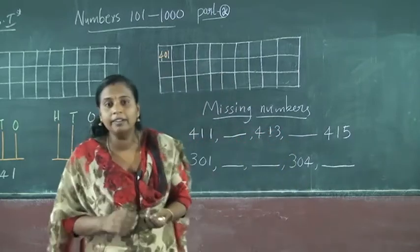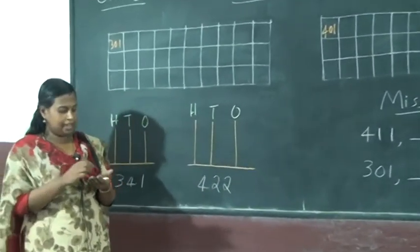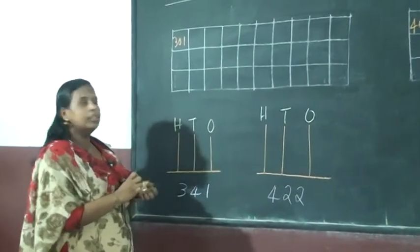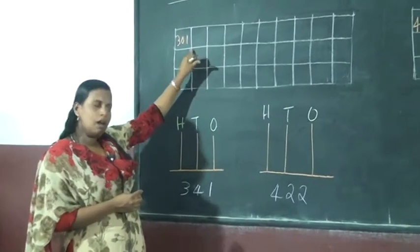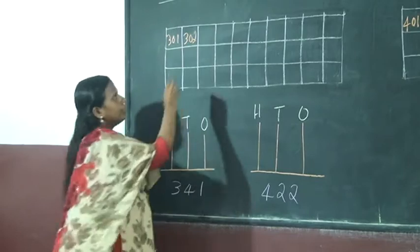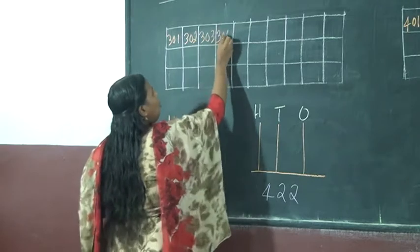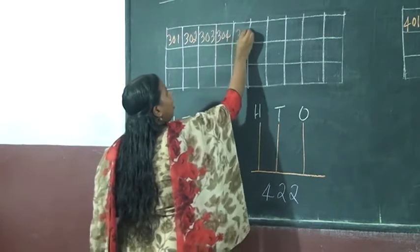Three hundred where you learn? Next, after three hundred. After three hundred, how many are there? Three hundred and two. Then three hundred and three, three hundred and four, three hundred and five, three hundred and six, three hundred and seven, three hundred and eight, three hundred and nine.